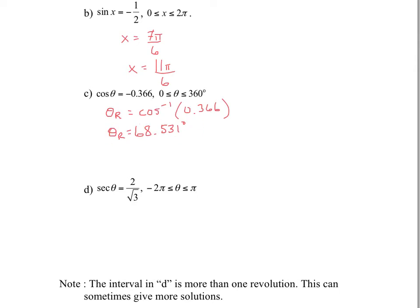With this reference angle, you're going to make a little chart and decide where is cos negative. Cos is negative in the second and third quadrant — cos is x, and x is negative in quadrants 2 and 3. In the second quadrant, you have 180 degrees minus the angle of reference, 68.531, which gives 111.469 degrees.